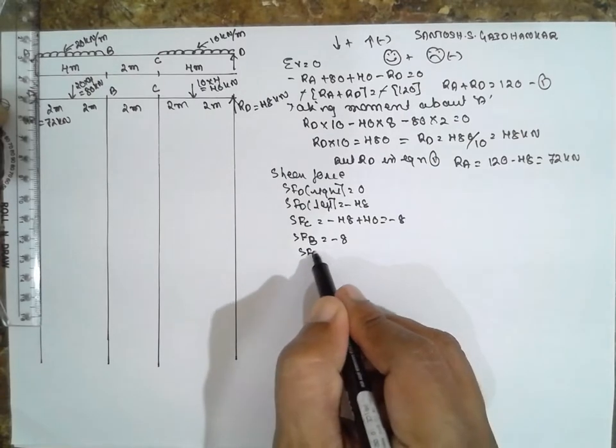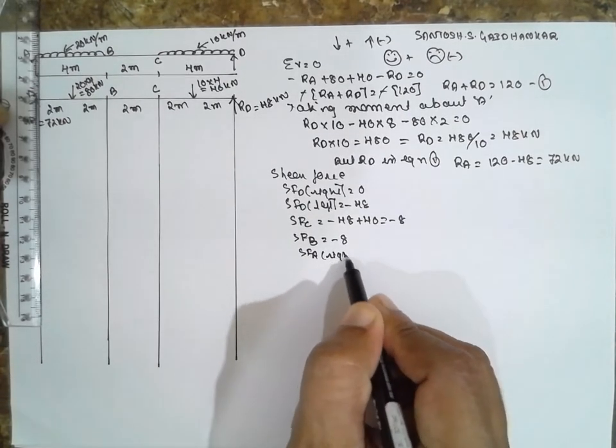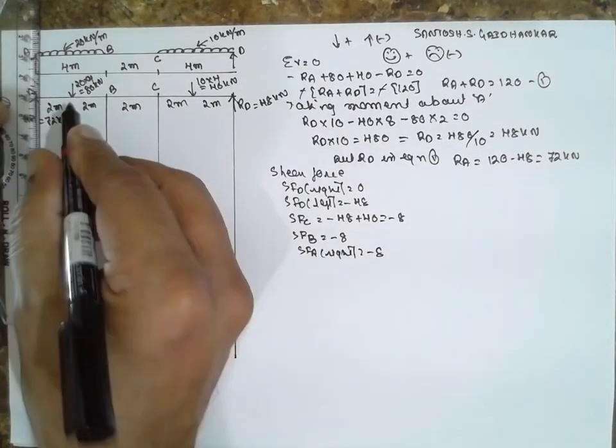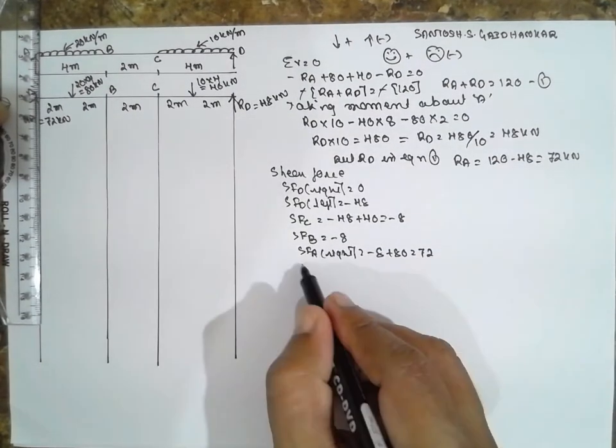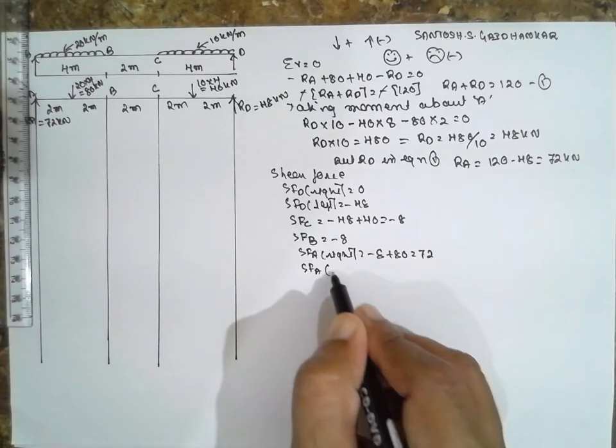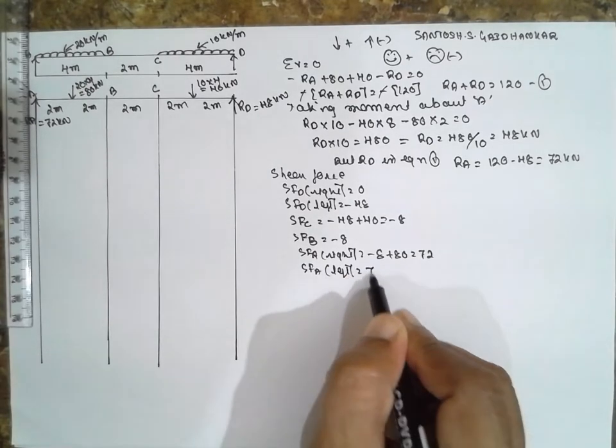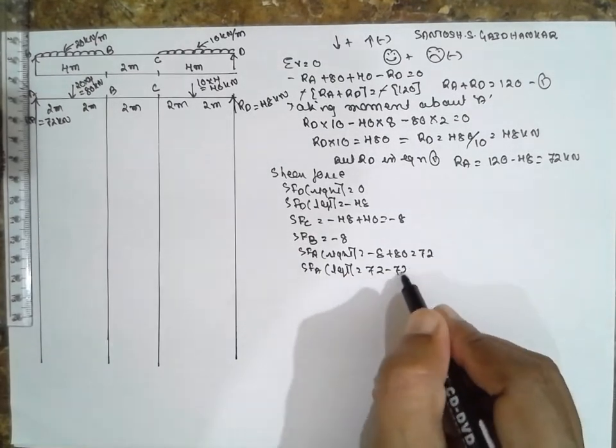SF at A right side, minus 8 plus 80 equals 72. SF on left, 72 minus 72 is equal to 0.